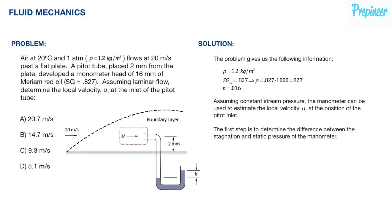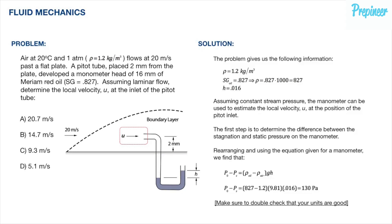Assuming constant stream pressure, the manometer can be used to estimate the local velocity at the position of the pitot inlet. The first step is to determine the difference between the stagnation and static pressure using the manometer equation from the NCES reference manual. Rearranging and plugging in the given information, we find that the difference between the stagnation and static pressure is 130.30 Pascals. Note: pay close attention to units throughout this calculation.